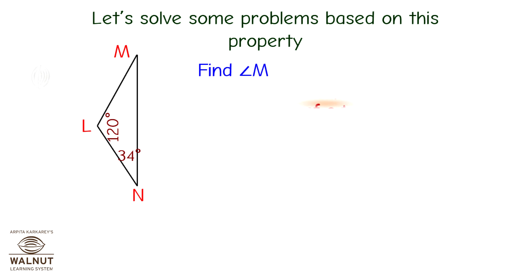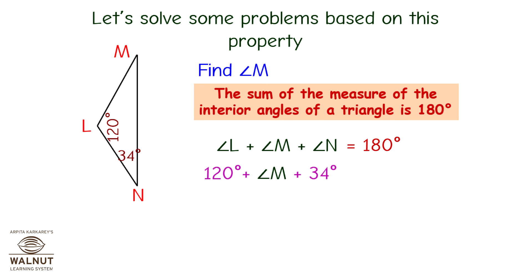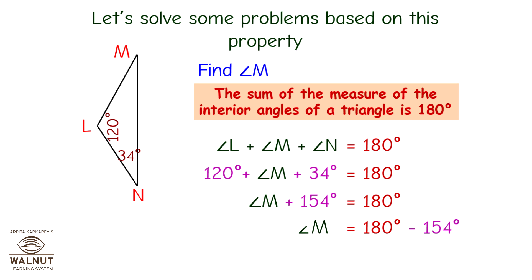Find angle M. The sum of the measure of the interior angles of a triangle is 180 degrees. So angle L plus angle M plus angle N is equal to 180 degrees. 120 degrees plus angle M plus 34 degrees equals 180 degrees. Angle M plus 154 degrees equals 180 degrees. Angle M is equal to 180 minus 154, which is 26 degrees.